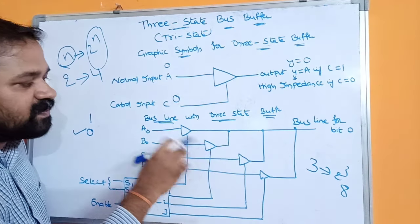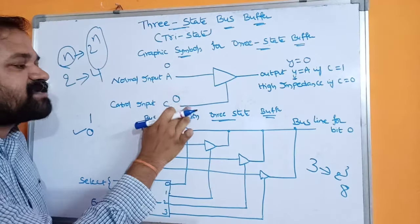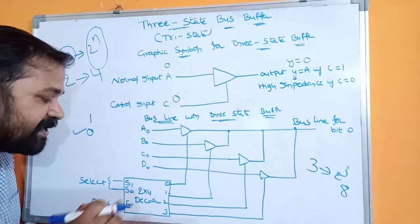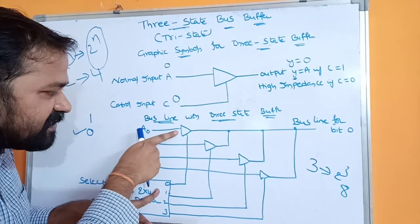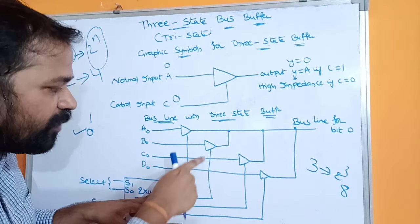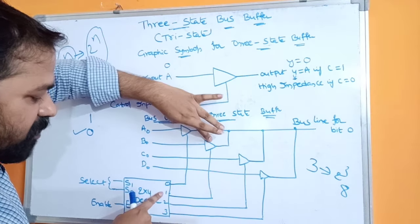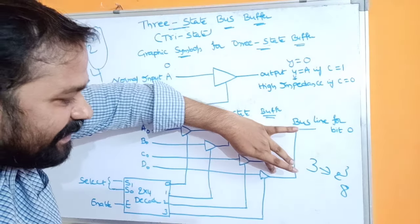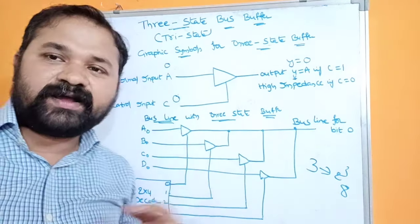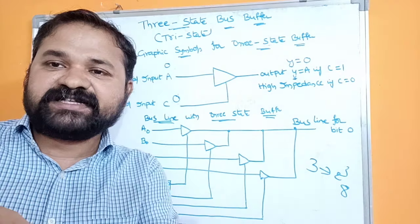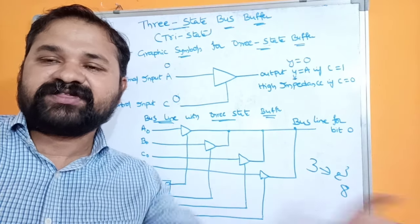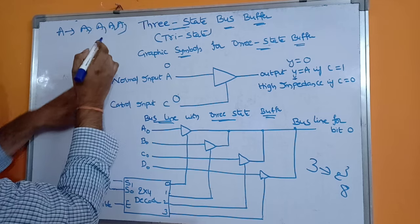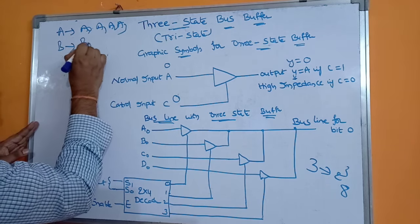Each three-state bus buffer accepts an input as well as a control input from one of the decoder outputs. The first three-state buffer gets its control input from output 0 of the decoder, the second from output 1, the third from output 2, and the fourth from output 3. Each register contains 4 bits: register A has bits A0, A1, A2, A3; register B has B0, B1, B2, B3. In this example we take only the first bit from each register to keep the diagram simple.